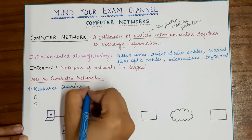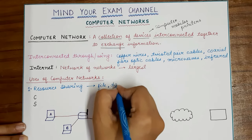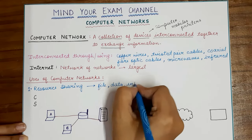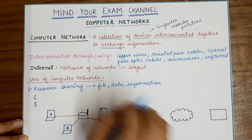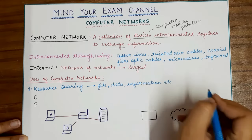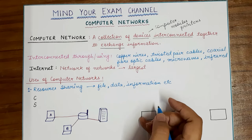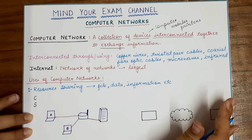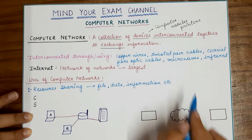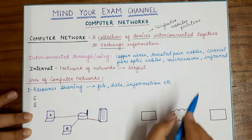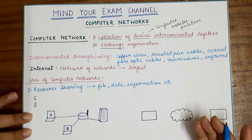Now what do I mean by resource? A resource can either be a file, any form of data, any form of information, or anything that you want to exchange from one machine or digital device to another. A printer can also be a resource — when multiple devices in your school or college are connected together such that a single printer is shared by multiple computers in your lab, all those computers can send a printing command to the shared printer. That is what is known as resource sharing.